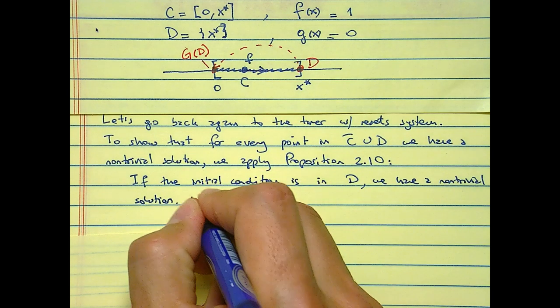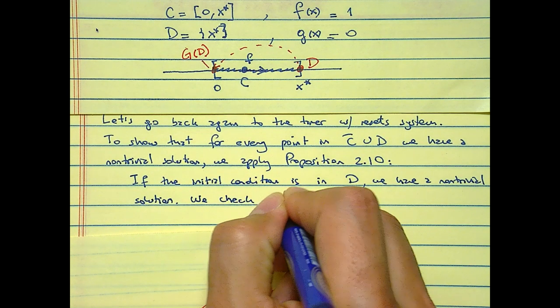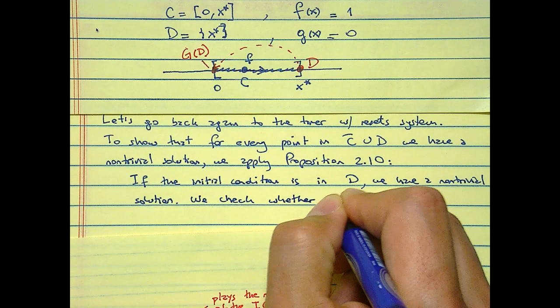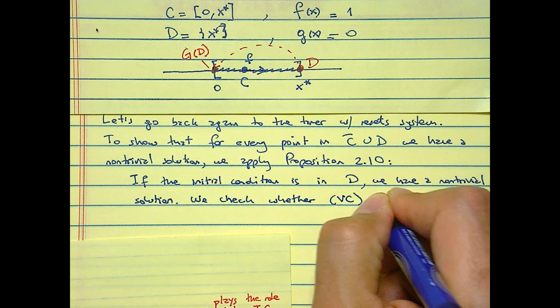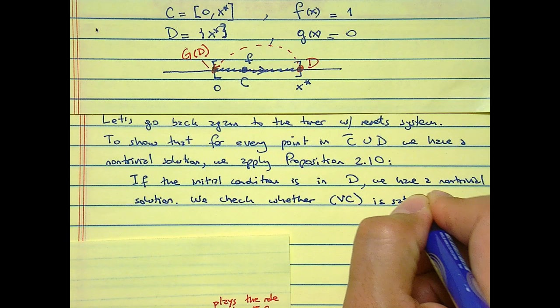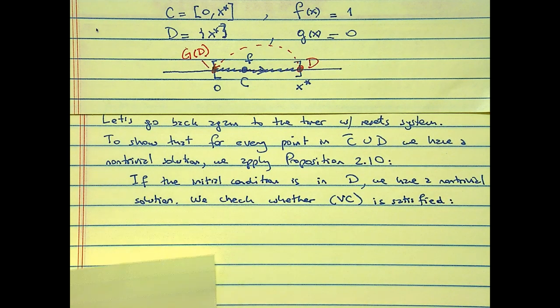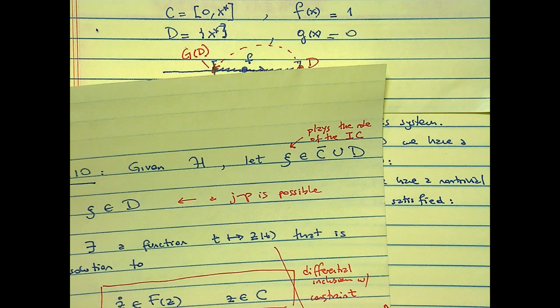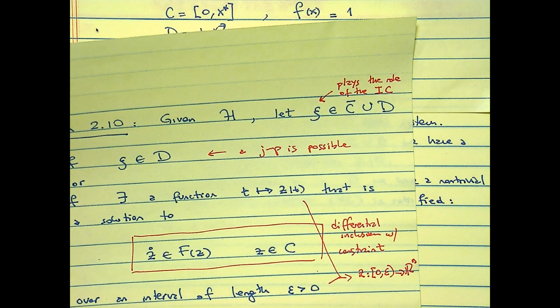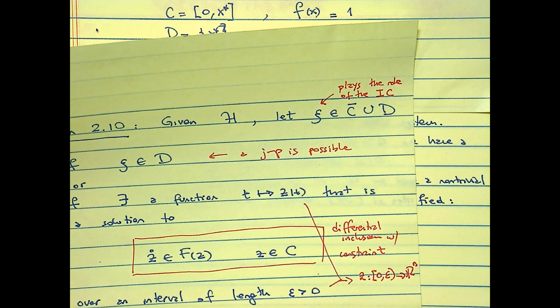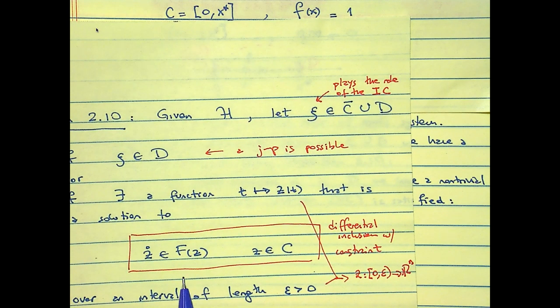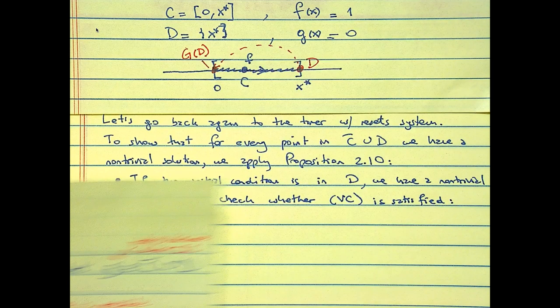We check whether VC, the viability condition, is satisfied. What is the viability condition telling us? The viability condition says that for the flow system with a constraint, we need to have a solution.